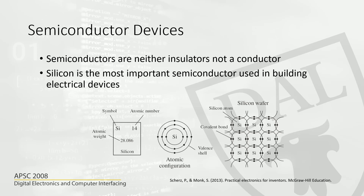However, germanium and selenium are not as abundantly available as silicon. Silicon has 14 electrons, and the most important thing is the four outermost electrons in the valence shell. These four valence electrons in the silicon atom make covalent bonds with other silicon atoms that are present nearby. A silicon wafer is not a conductor because we don't have free electrons.